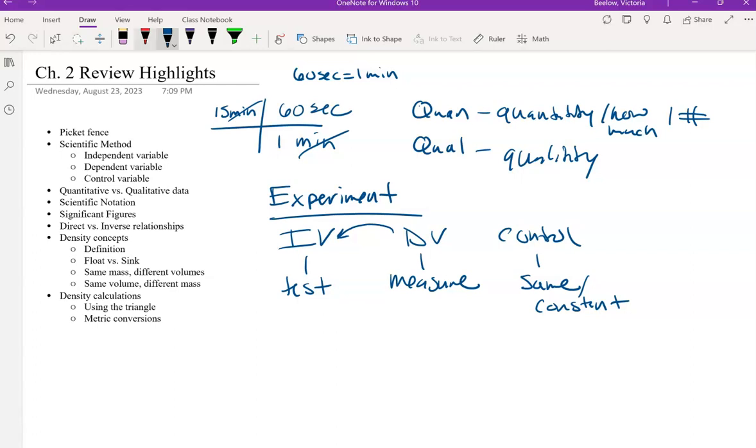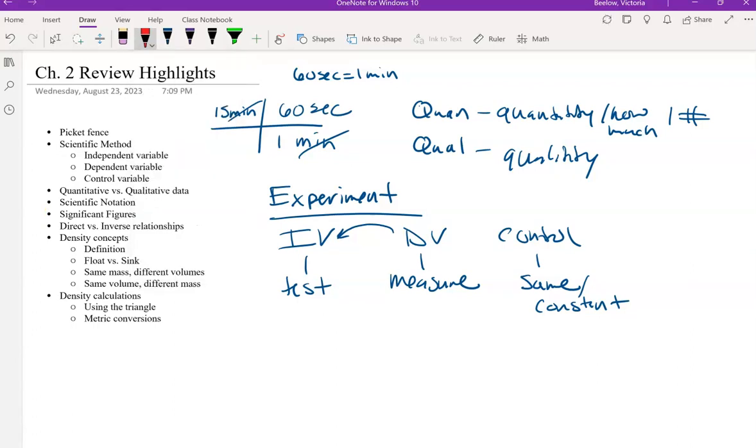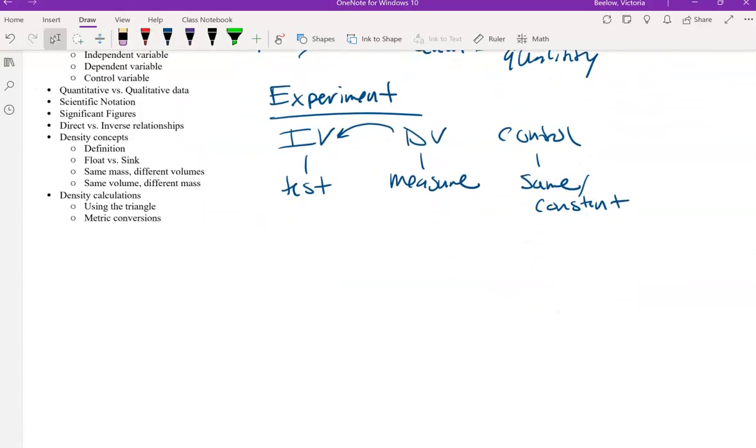All right, next, I have scientific notation and significant figures. So, scientific notation is when you have some type of a number. So, I'm going to make it up 2.13 times 10 to the fourth power. So, this is scientific notation. This method we use to represent very big or very small numbers, without having to write out all of the zeros.